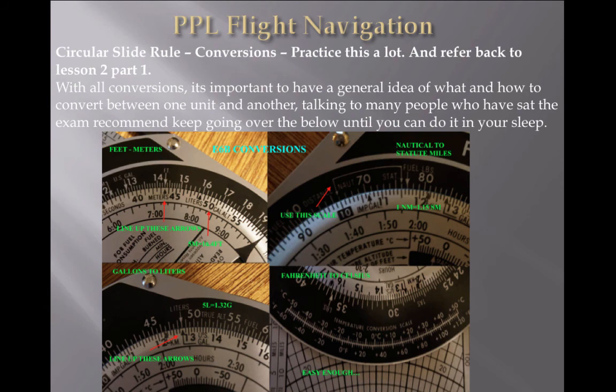For feet and meters, you line up the arrows between feet and meters. If you want meters to feet, find your 50 and you'll get 16.5. Or if going from feet to meters, use outer scale to inner. It really isn't rocket science, but get used to using this because you will see these — especially litres to gallons, where gallons can be US or imperial, so keep an eye out for those quirky questions. With all conversions, it's important to have a general idea. They can account for up to four or five questions in your exam.